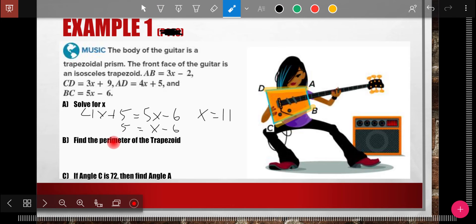Next, it says find the perimeter. To find the perimeter, I've got to plug X back in. So let's start with AD, since that's the one we used. So 11 times 4. 4 times 11 plus 5. 4 times 11 is 44 plus 5 is 49.